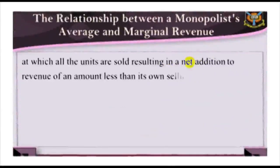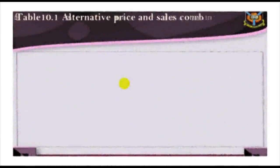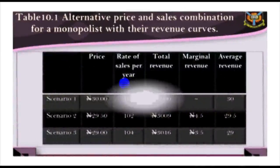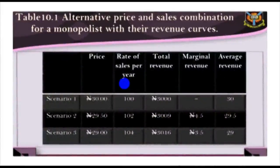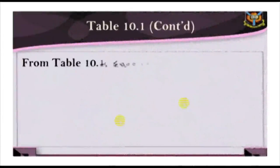A simple example is illustrated in Table 10.1. In Scenario 1: price is 30 Naira, rate of sales per year is 100, total revenue is 3,000, marginal revenue is 0, and average revenue is 30. In Scenario 2: price is 29 Naira 50 kobo, rate of sales per year is 102, total revenue is 3,009 Naira, marginal revenue is 4.50 Naira, and average revenue is 29 Naira.